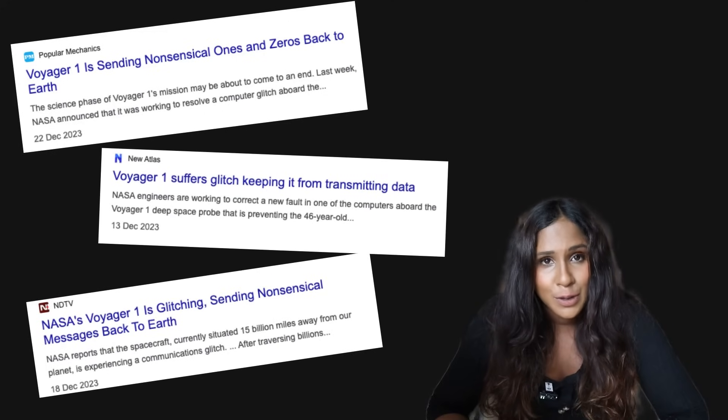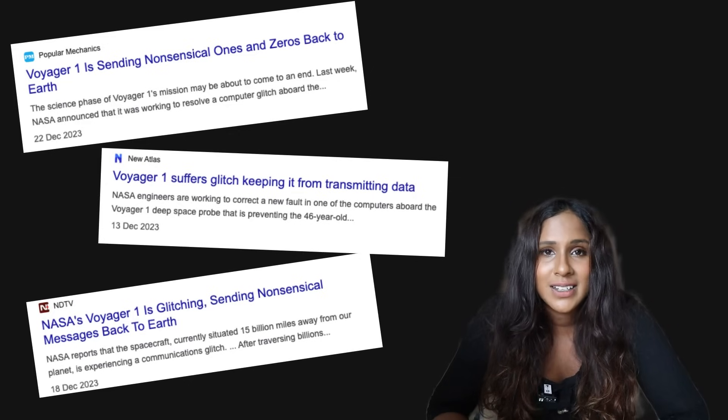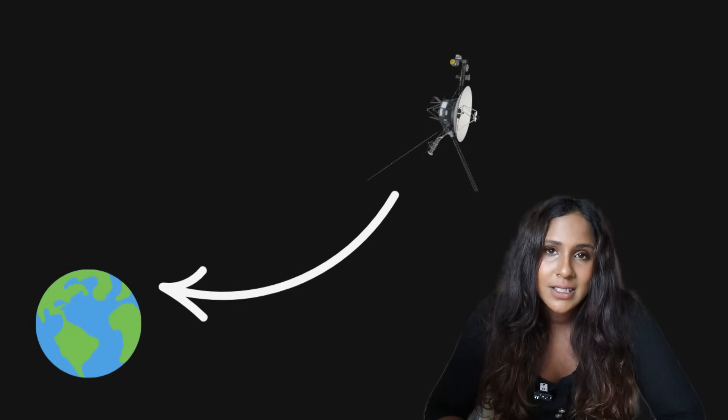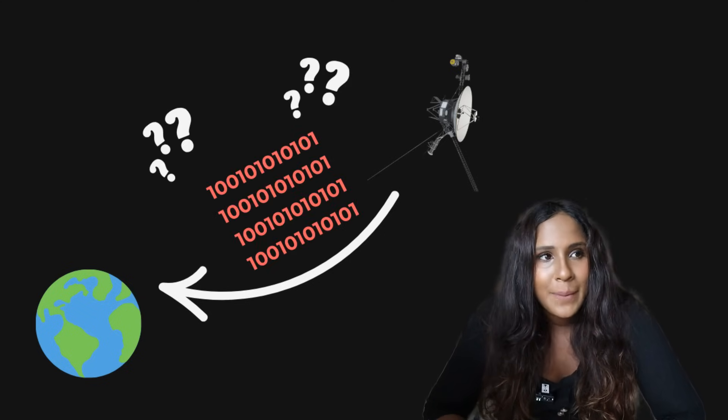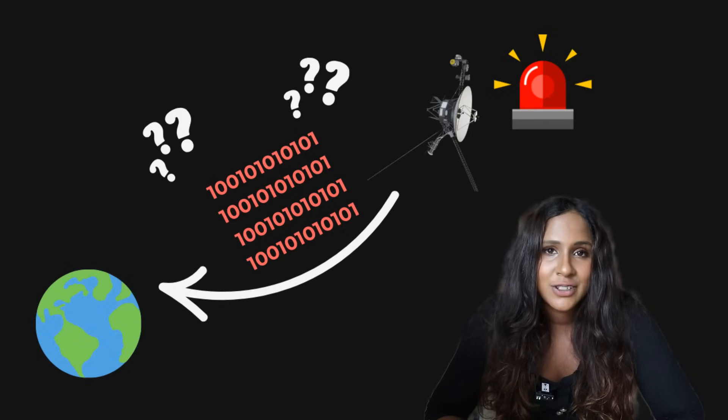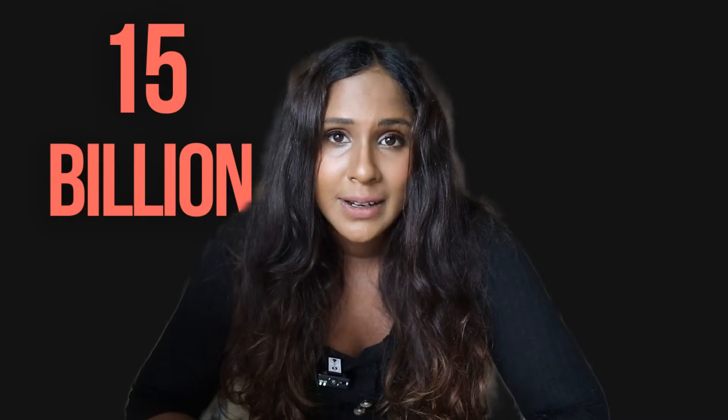in November 2023, Voyager 1 stopped making sense when it was sending its data transmissions to Earth. In fact, the flight data system began sending indecipherable, repeating pattern of codes that NASA just couldn't understand. Voyager 1 had a bug. And NASA had to come up with a solution quickly. But how do you fix a software bug that's 15 billion miles away?